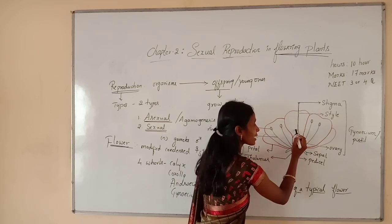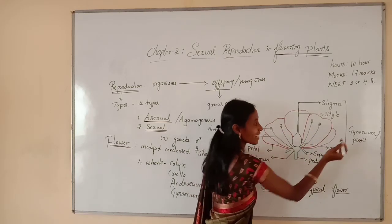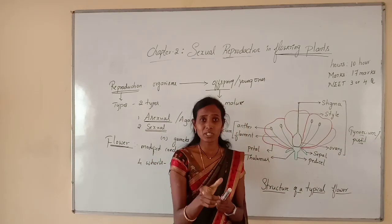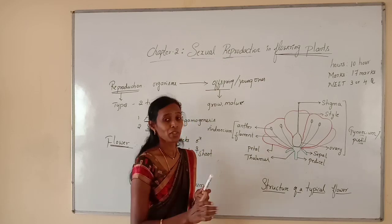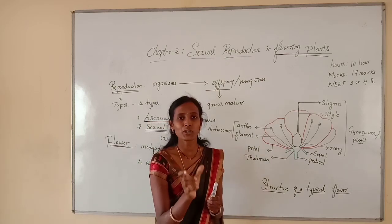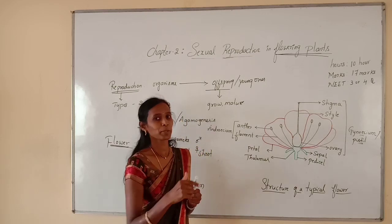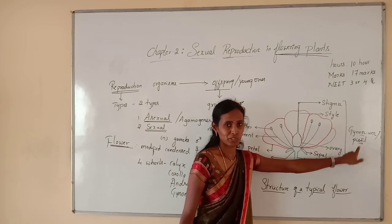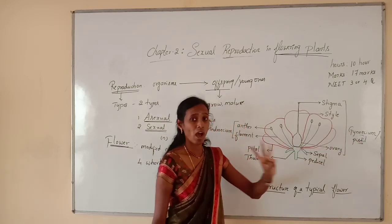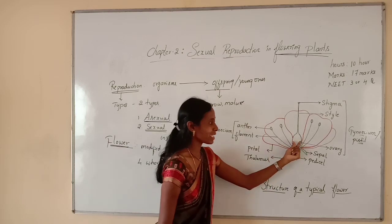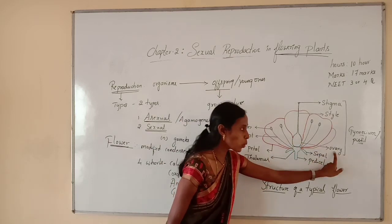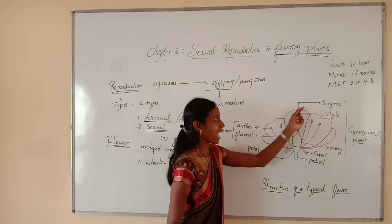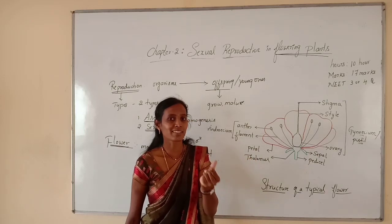The floral whorls are actually modified leaves. There are usually four whorls of the flower arranged on the thalamus. The four whorls of a flower are calyx, corolla, androecium, and gynoecium. The innermost whorl is called as gynoecium, which can also be called as pistil — the female reproductive part of the flower. Gynoecium consists of three parts: the basal swollen portion called ovary, the elongated stalk-like structure called style, and the terminal expanded part called stigma.